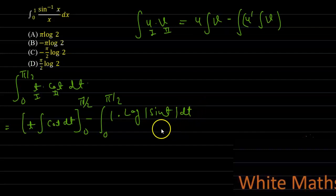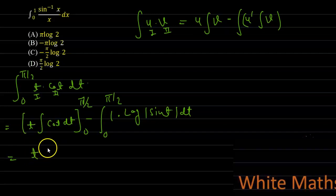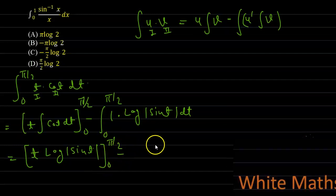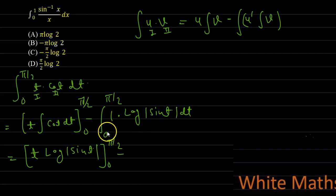With the limit 0 to pi by 2, we now apply the limits. The expression becomes t times log of mod sine t, with limit 0 to pi by 2, minus the integral from 0 to pi by 2 of log of mod sine t dt. The standard result is that the integral from 0 to pi by 2 of log of mod sine t dt equals minus pi by 2 log 2.